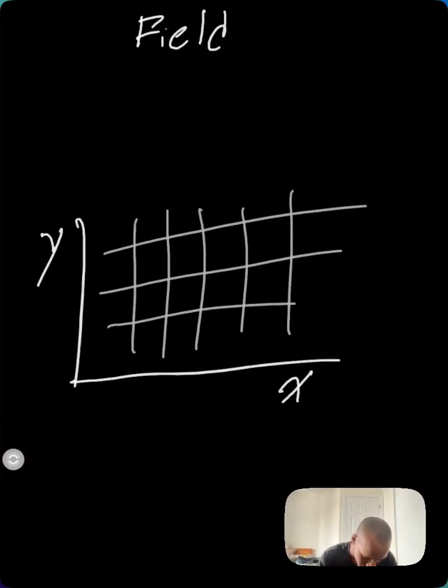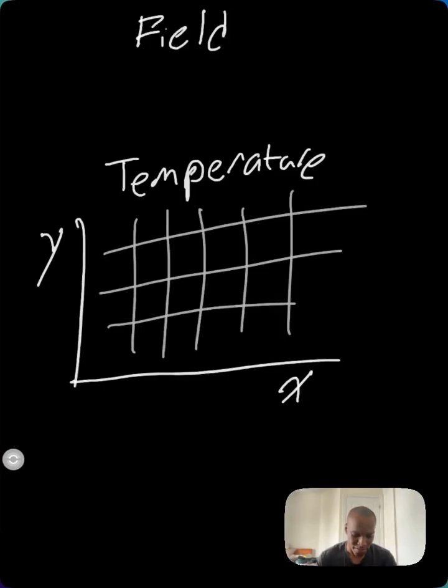Now, what about a field? What's a field? You can think of a field as a grid where every single point in space has its own value. So let me draw that really quick. Imagine this is a graph of temperature, and each of these points has a value. Let's denote that by different colors.